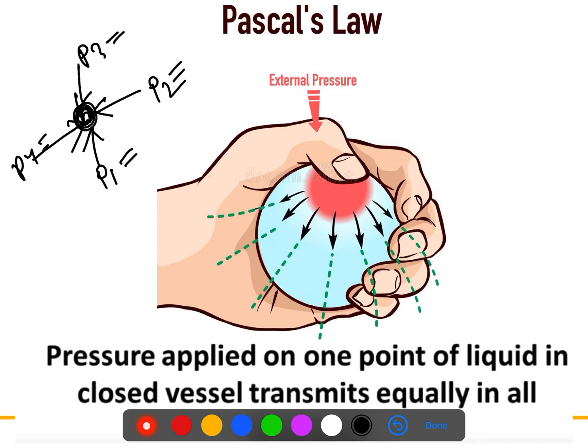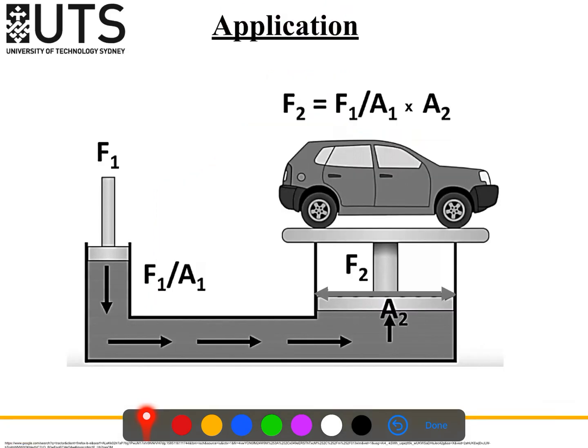Let's understand the application of this. Pascal said if we apply pressure here, it will transmit equal pressure in all directions. Say this is a U-shaped tube with a piston here - this is a smaller piston, and we have a large piston here.